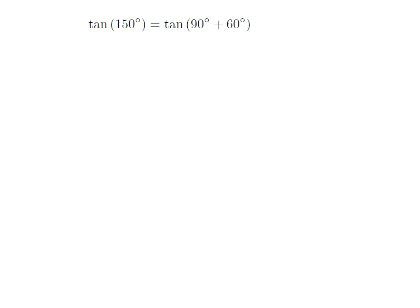As 150 degree is equal to 90 degree plus 60 degree, so tangent of 150 degree is equal to tangent of 90 degree plus 60 degree.